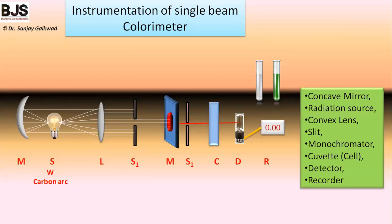Looking at the instrumentation of the colorimeter, it contains a light source, mirror, lens, slit one, monochromator, slit two, the cuvette, detector, and recorder. Polychromatic light is made parallel by the lens and then passes through the filter or monochromator, which selects a single wavelength. The light then falls on the cuvette where it is partially absorbed, and the remaining transmitted light falls on the detector, which gives a response measured by the recorder.